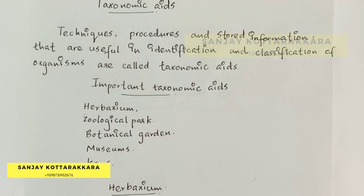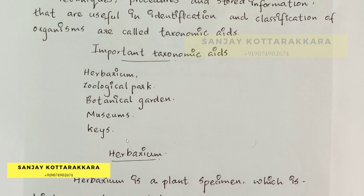Here are the taxonomical aids: the herbarium, the zoological parks, the botanical gardens, the museums, and the keys. So these are a number of things we will understand.